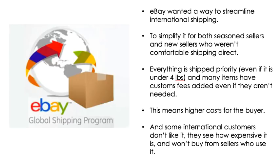Everything through the global shipping program is shipped priority, and many items have customs fees added to them even if they're not necessary — part of that streamlining where eBay is trying to make one process for everything. That means higher costs for the buyer. I've heard from friends in Australia and people in the United Kingdom that they will not buy from US sellers who offer this global shipping program because it's too expensive. As soon as they see it on your listing, they click away and find somebody who's shipping direct.